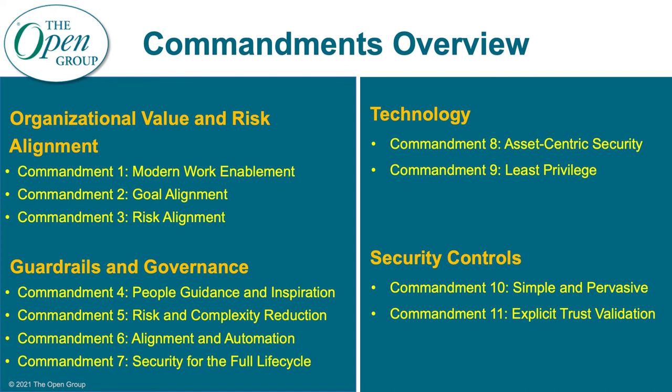The next section, guardrails and governance, is about keeping things on track. The first part covers people, guidance, and inspiration — everybody's got to be on the same page. You need architecture, policy, and standards that help everyone within the security organization and elsewhere understand how to work together. Then risk and complexity reduction — keeping it as simple as possible. And alignment and automation — keeping all the different parts working together instead of operating in silos.